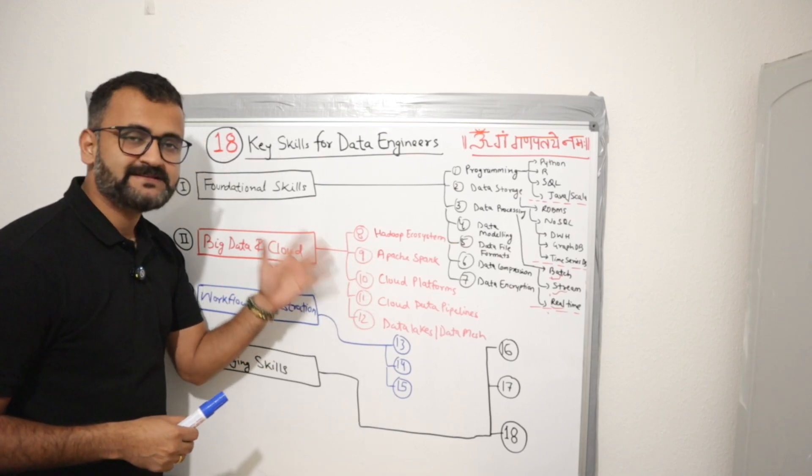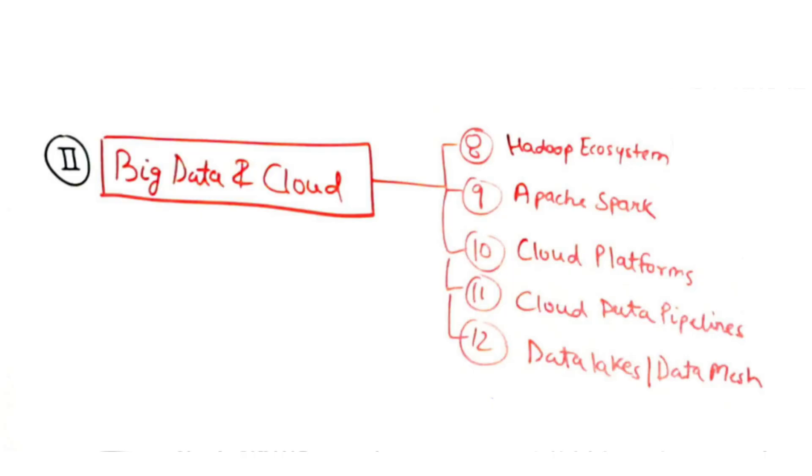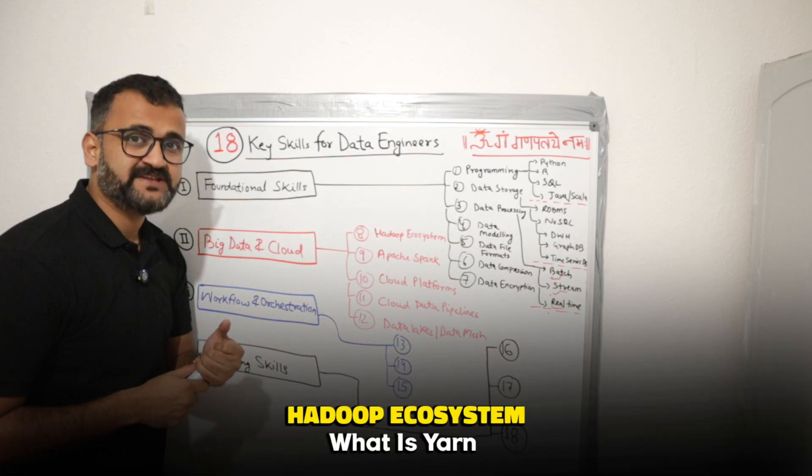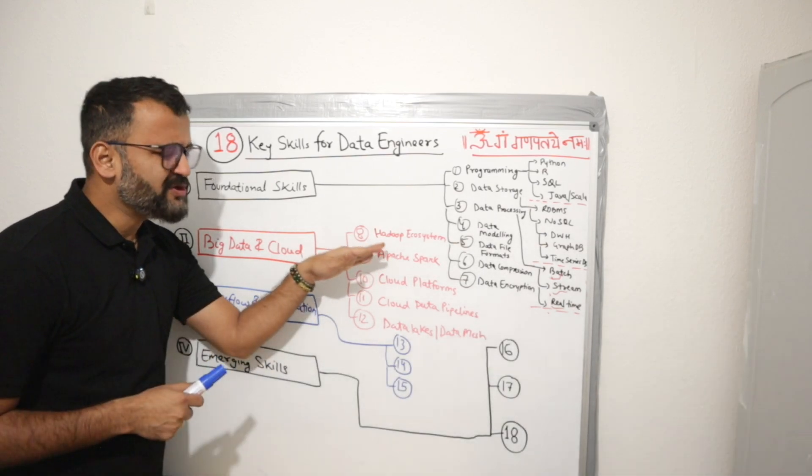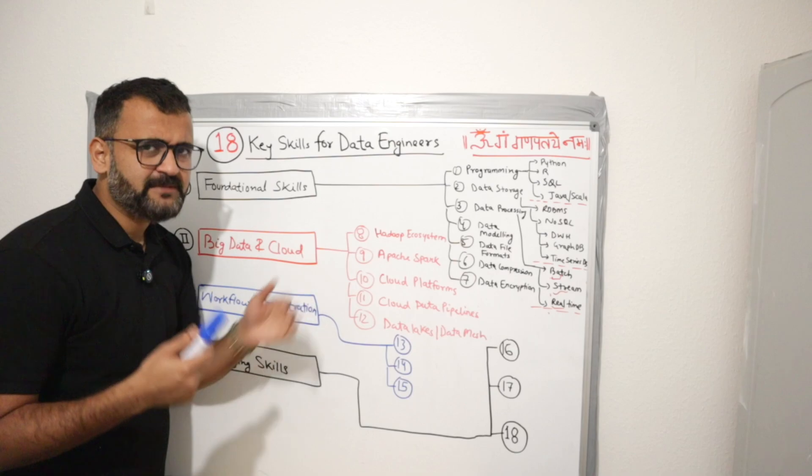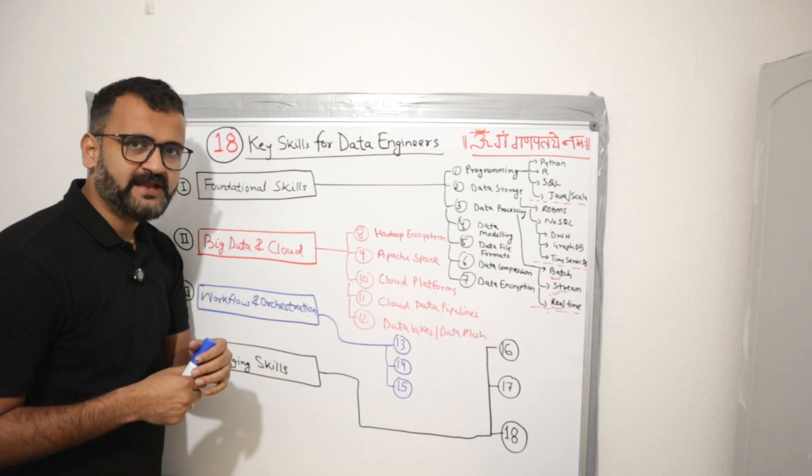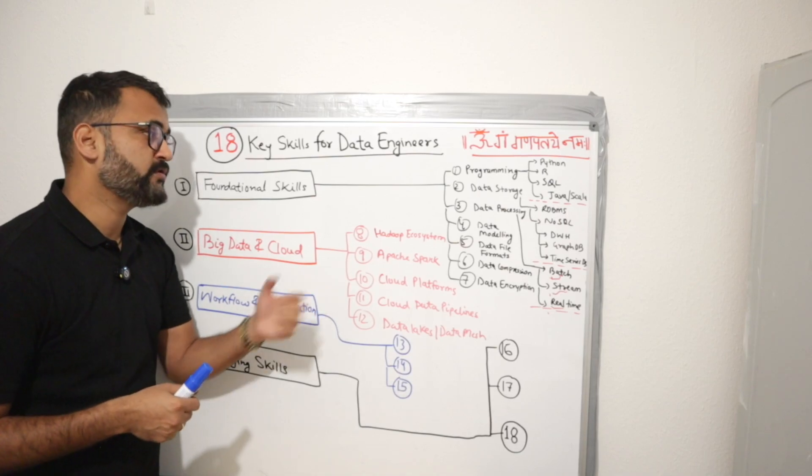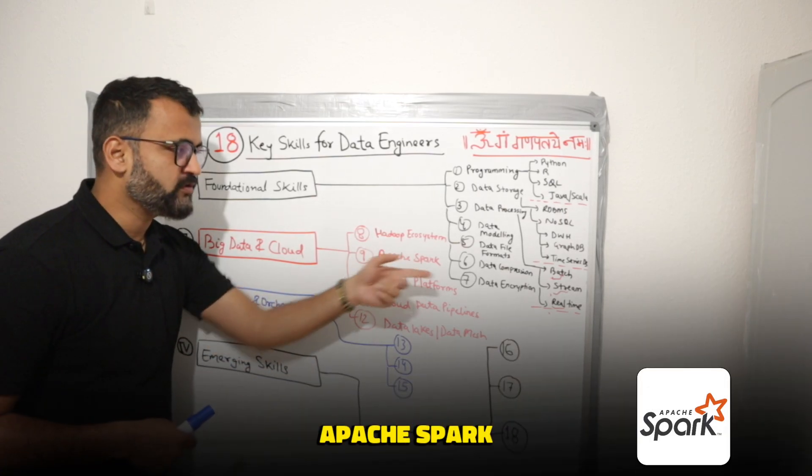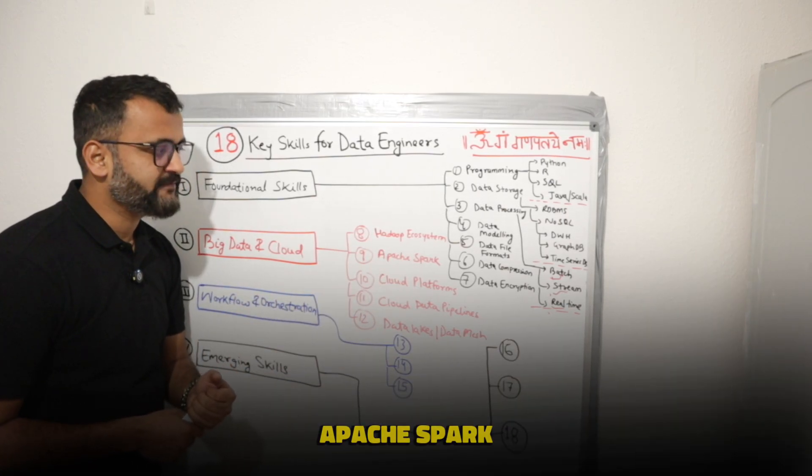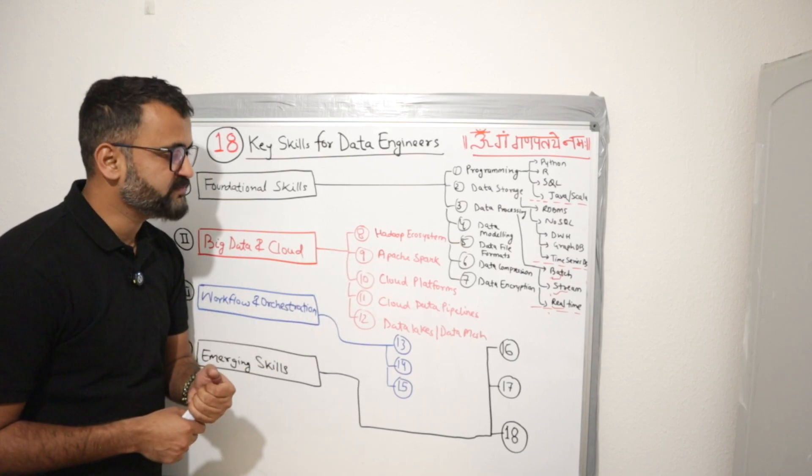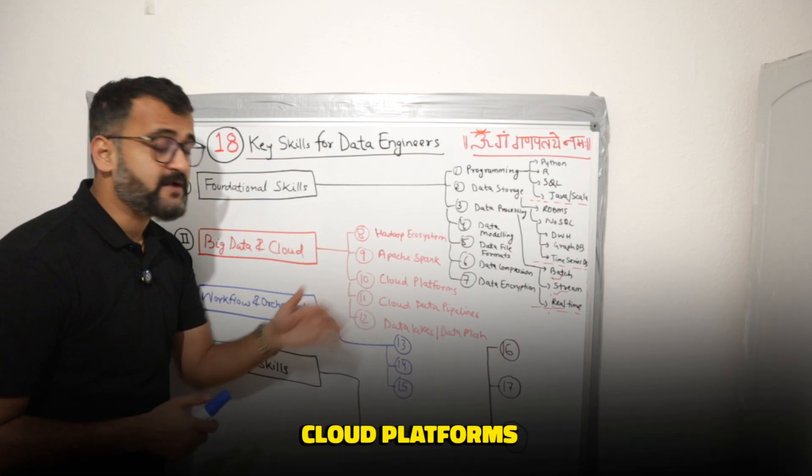Now let's understand some key skills under big data and cloud. Number one is Hadoop ecosystem. How Hadoop ecosystem works? What is Yarn? What is MapReduce? Slowly and gradually, it is becoming irrelevant in certain areas because we have other technologies taking over. But understanding Hadoop ecosystem could be a good bet. Apache Spark, we have already discussed that. Whenever we are talking about large big data sets, Apache Spark will always be there.